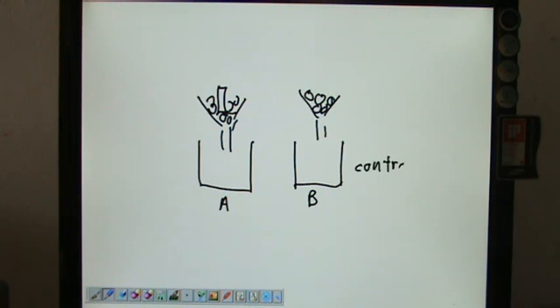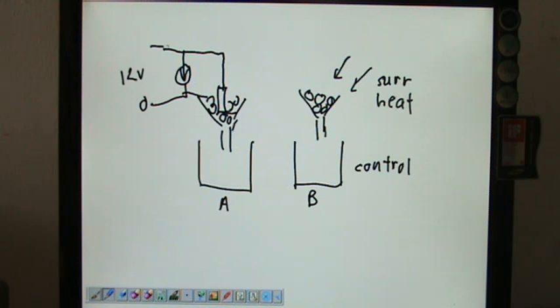On the other hand, they also put the same amount of ice without the heater. A and B—and B acts as a control to find out the effects of the surrounding temperature. This is called surrounding heat. So this heater is connected to some kind of circuit, so we have a voltmeter here.